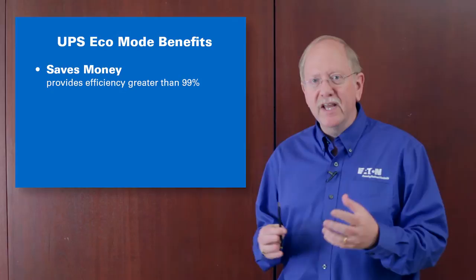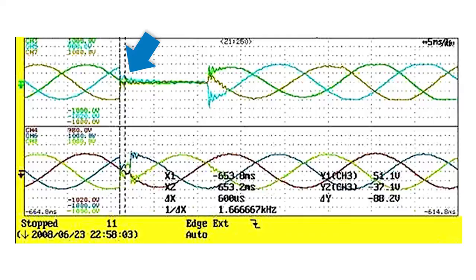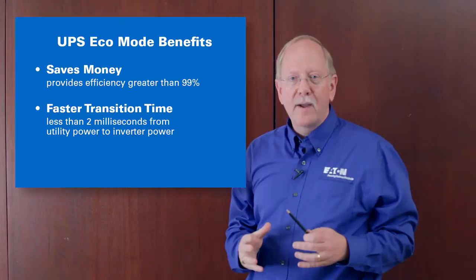By far, the biggest concern with eco mode UPS operation is the observer has trouble accepting that we can, in fact, transition from static switch operation to double conversion operation in less than two milliseconds. So, we use an oscilloscope trace as proof. Here we see the input power disrupted coming into the UPS, and the output power here. At the same point, we do not go to zero volts, but continue to produce a three-phase output. And the transition time from utility power to inverter power is, in fact, less than two milliseconds.